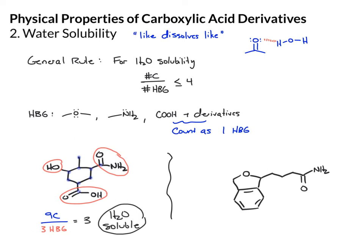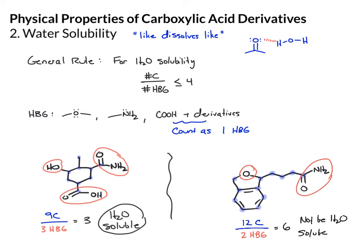In the second example, count the carbons: 1, 2, 3, 4, 5, 6, 7, 8, 9, 10, 11, 12 — so we have 12 carbons. Then our hydrogen bonding groups: we have this oxygen and the amide — two hydrogen bonding groups. That's six. That means there's just too much hydrocarbon nature in this molecule for it to be water soluble. We would expect this to not be water soluble, and we would expect it to be soluble in an organic solvent, something maybe like THF.